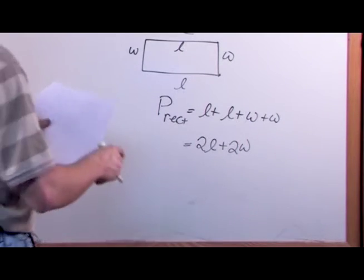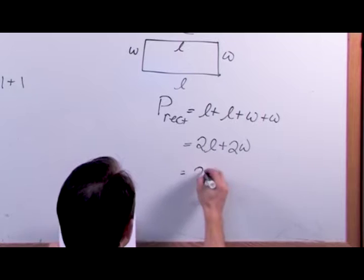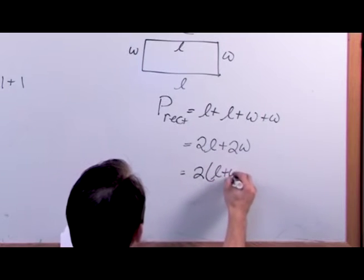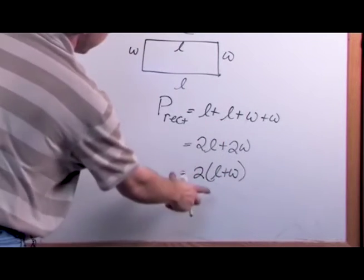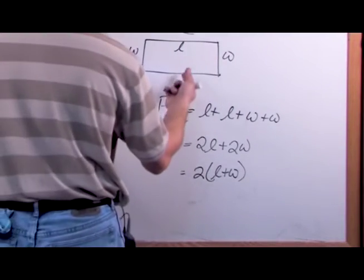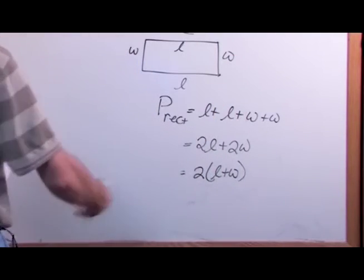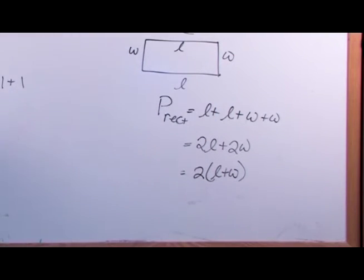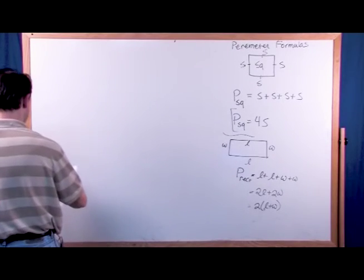A lot of times in the book you'll see the perimeter of a rectangle written as 2L plus 2W, or you can also see it written as 2 times the quantity L plus W. There's no difference — these are all saying the same thing. Since you know the two L sides are the same and the two W sides are the same, you have a little formula you can use, but the concept is the same.